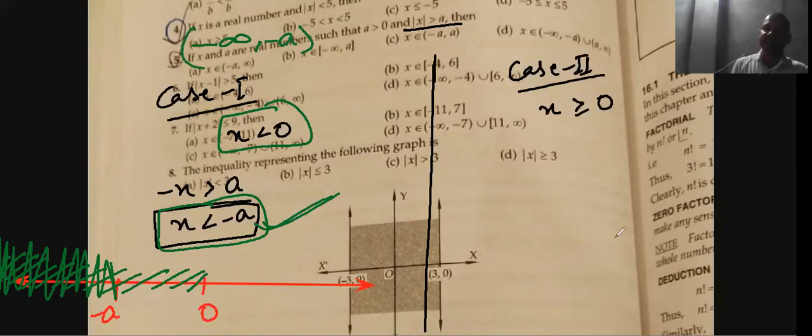Now, in case 2, we go in case 2, x is greater than equal to 0. So, when x is positive, you will be positive, will it open with plus or minus? Yes, with plus. This means that x is greater than A. Now, we took the number line. Here we took 0. Here we took A.